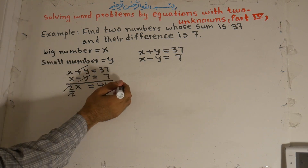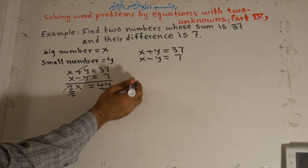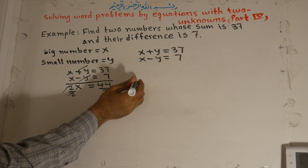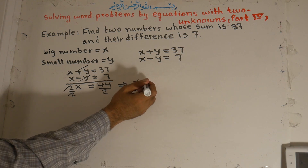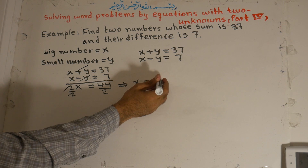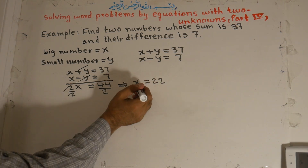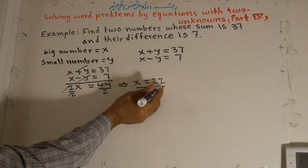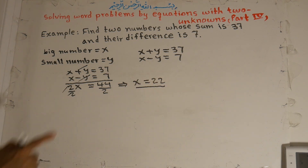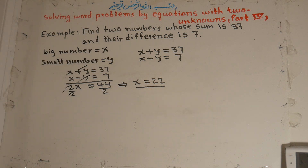We can divide both sides by 2. x is equal to 44 divided by 2, which is 22. x, meaning the large number, is 22. Now we plug this 22 into one of the equations — for example, equation number 1 — to find the value of y.